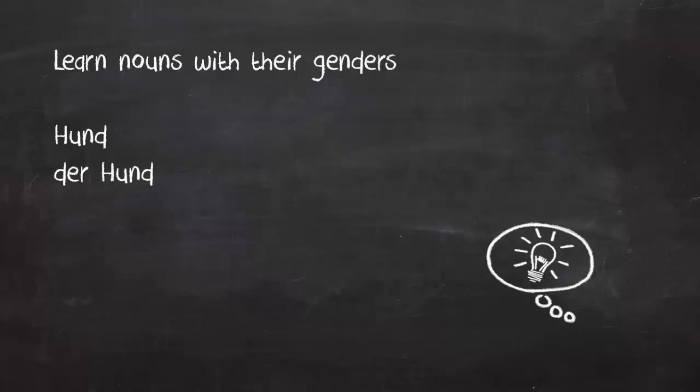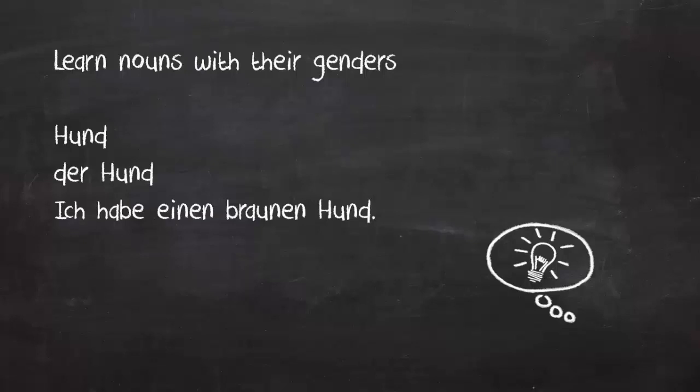It's even better to learn a whole sentence — for example, 'Ich habe einen braunen Hund,' meaning 'I have a brown dog.' Our brain doesn't really like disconnected pieces of information; a meaningful context makes it much easier to remember. In this sentence, for example, you also learn and practice the accusative form of the indefinite article 'einen.' You learn a sentence that is relevant to you and know that it's correct, so in conversation you can use it with confidence. And this will make your German more fluent.